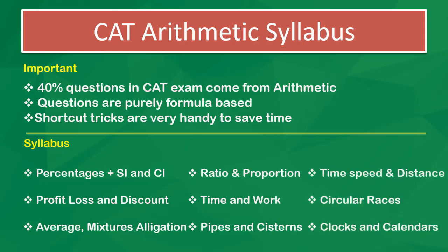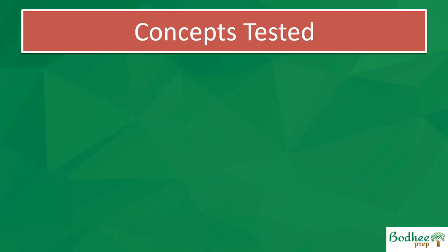One of the classic topics in CAT arithmetic is time, speed, and distance — it has always been there and will always be there. You can expect questions from time/speed/distance, time and work, pipes and systems, ratio and proportion, mixtures and allegation, and profit and loss. One or two questions will come from all topics, even circular races — people running around a circular track in one direction or opposite direction. Clocks and calendars are not very common in CAT but may appear in other exams.